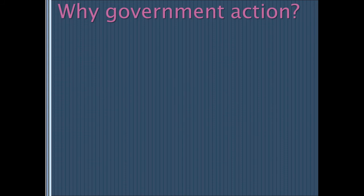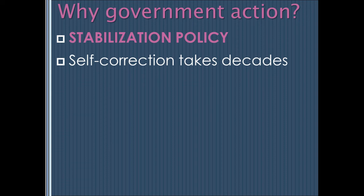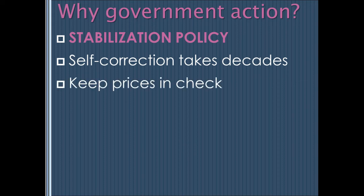Why does the government engage in fiscal policy to stabilize the economy? Stabilization policy is really about addressing output gaps, either inflationary or recessionary in nature. The economy will correct itself, but it can take years and years for that self-correction to occur, during which time it can be extraordinarily painful for people to go through the process of recalibrating prices and asset values. So the government says, we want to keep prices in check, keep employment strong, and let's step in and deal with the problem.